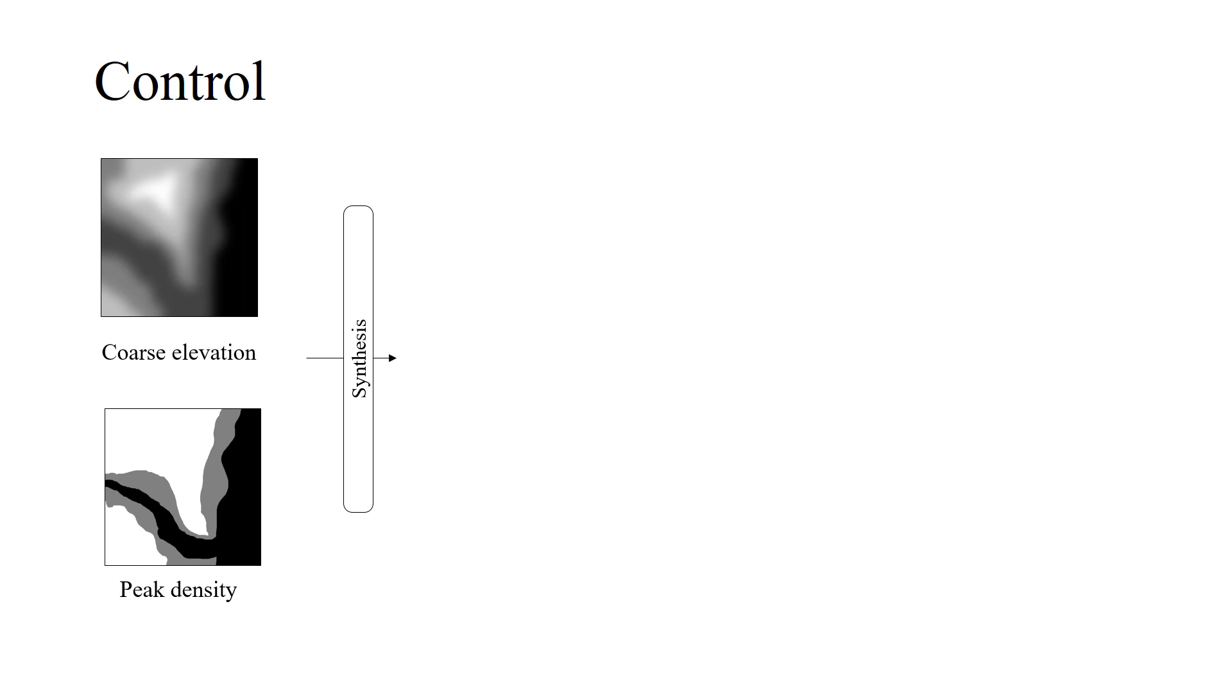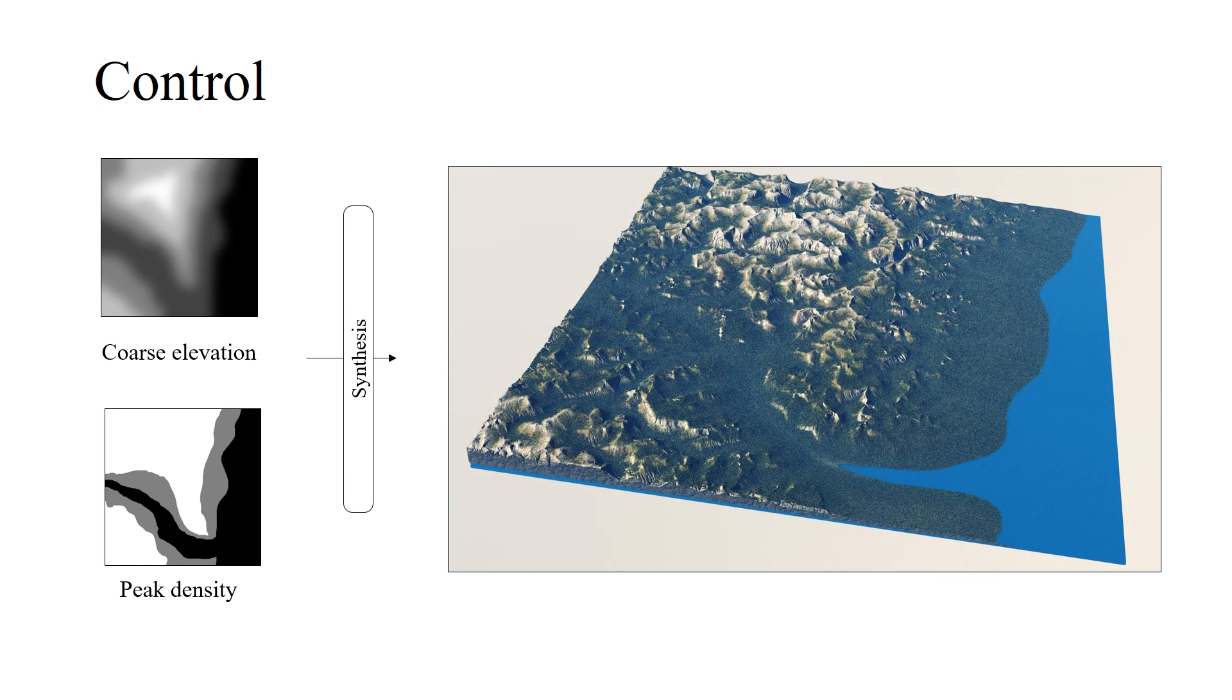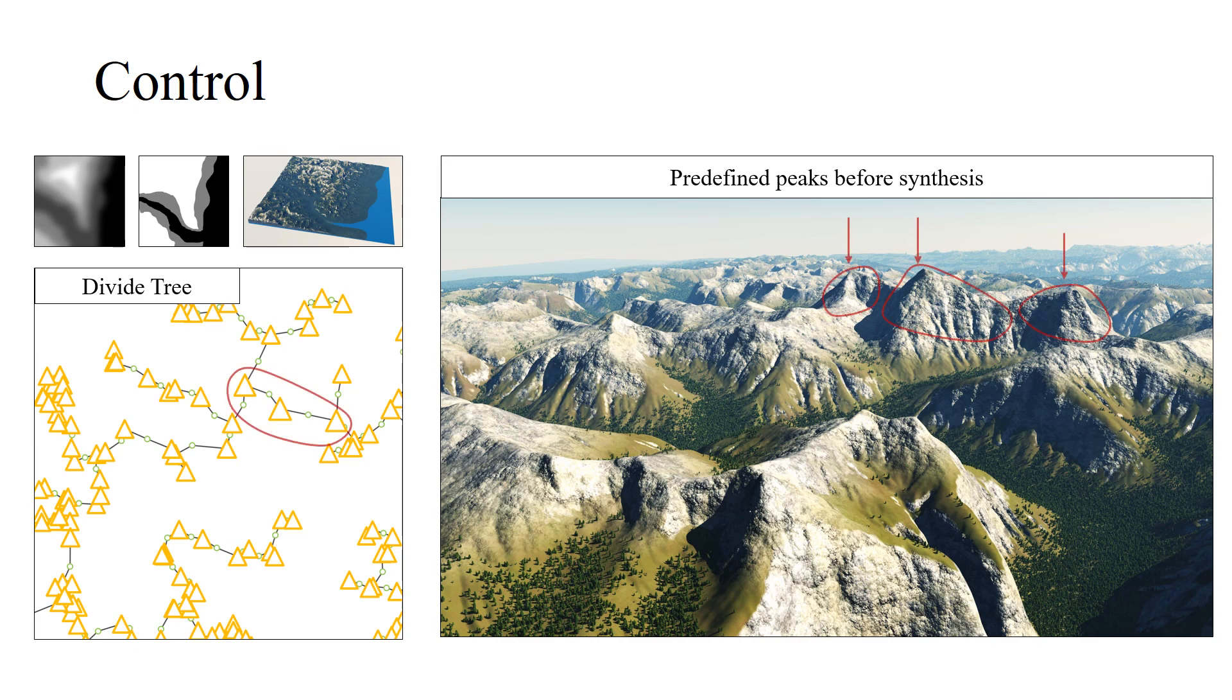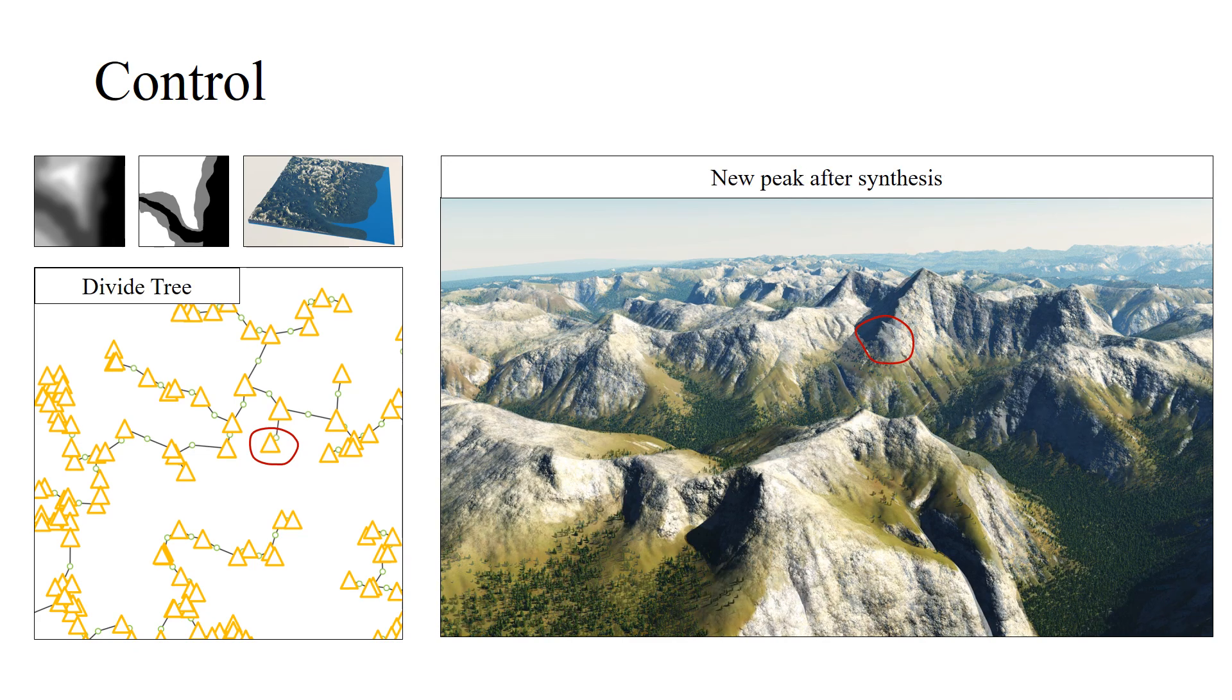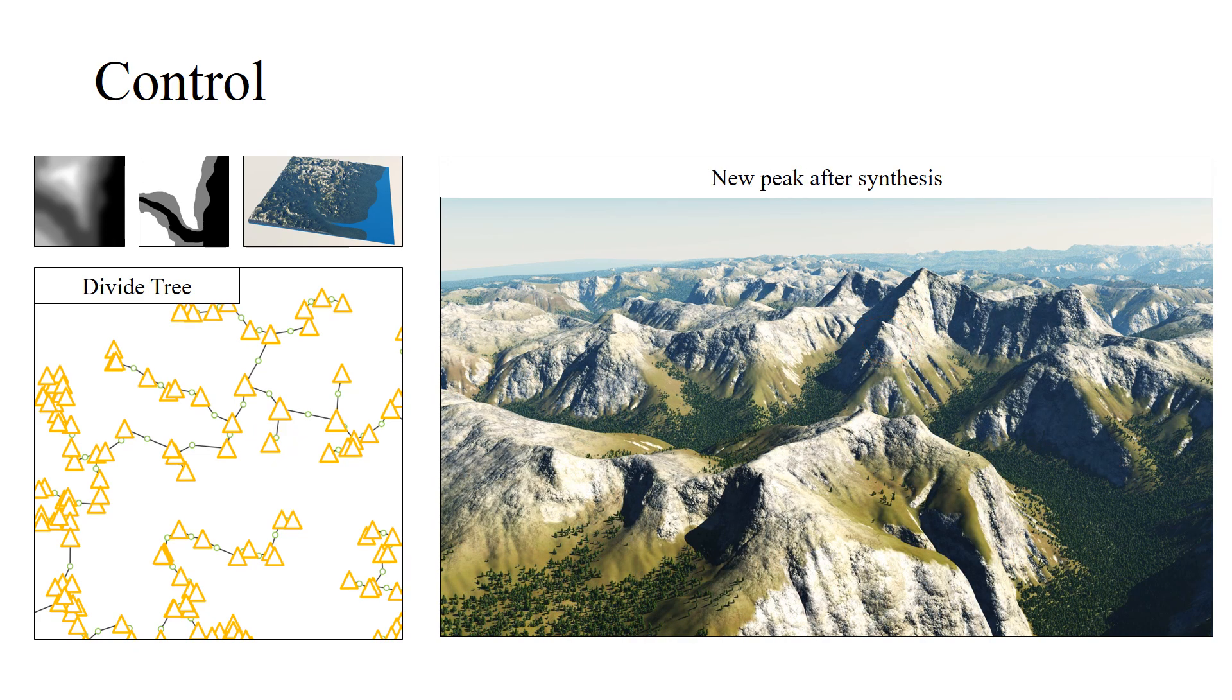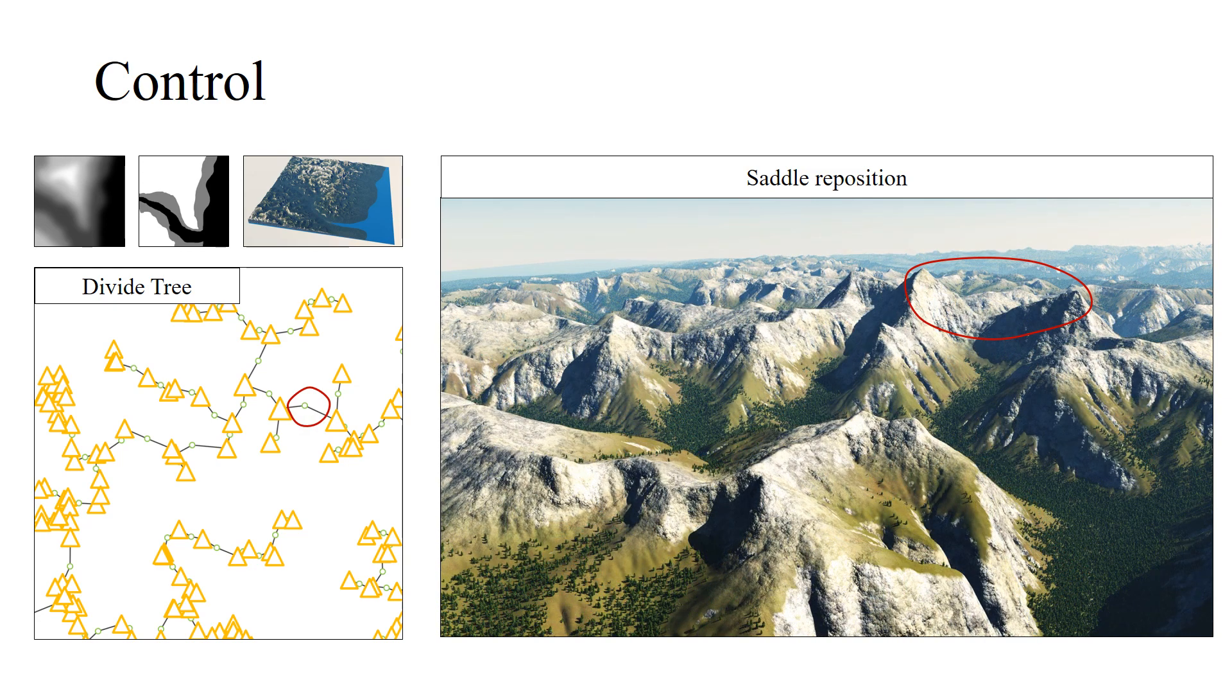Our method allows for high-level user control through control maps. It is also possible to modify peak locations and elevations of the mountain scapes, or even ridges.